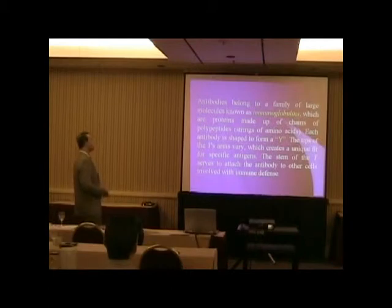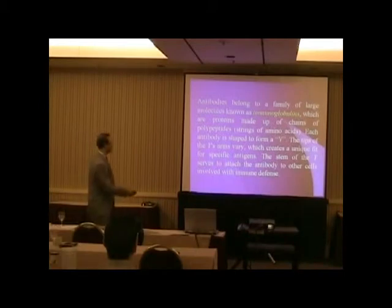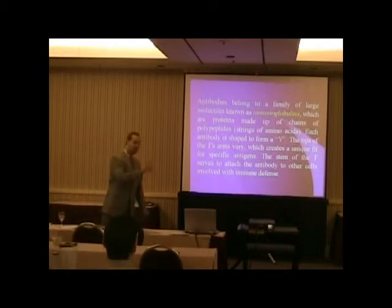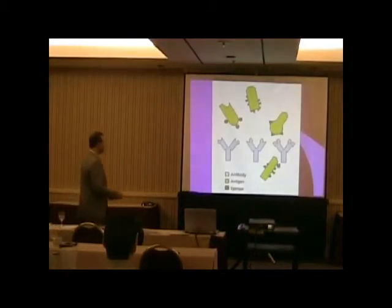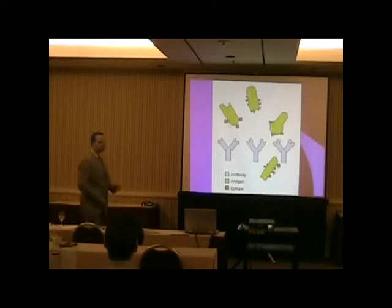Antibodies belong to a family of large molecules known as immunoglobulins. They're proteins made up of polypeptide chains, which are basically amino acids, and they're shaped like a Y. The tips of the Y are shaped differently so that different antigens can fit into them — the antibody hooks into different antigens. You can see the antibodies have different shapes, and the antigens must match; this antibody won't work for that antigen, but this one will connect into this antigen and destroy it.